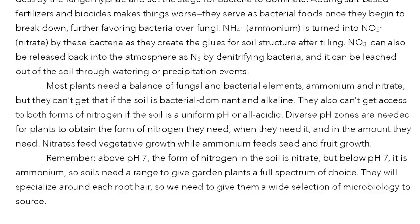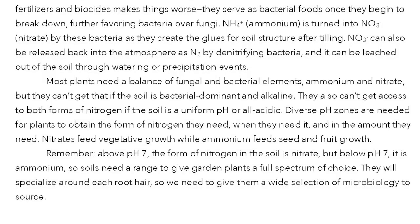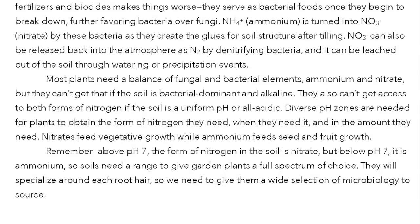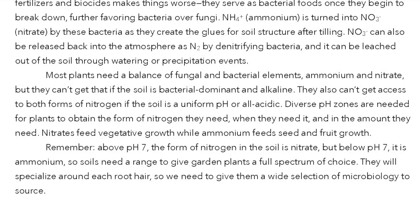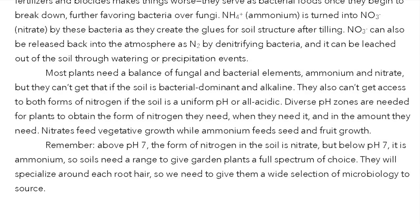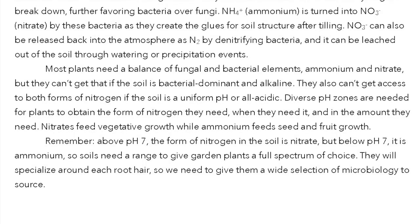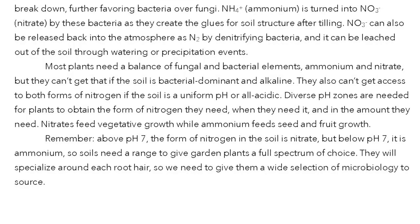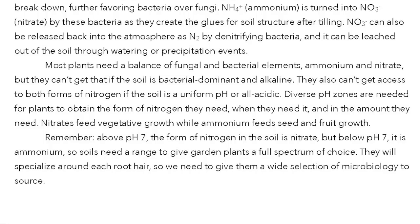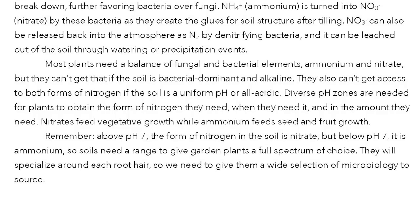Plants also can't get access to both forms of nitrogen if the soil is a uniform pH or all acidic. Diverse pH zones are needed for plants to obtain the form of nitrogen they need, when they need it, and in the amount they need. Nitrates feed vegetative growth, while ammonium feeds seed and fruit growth. Remember: above pH 7, the form of nitrogen in the soil is nitrate; below pH 7, it is ammonium. So soils need a range to give garden plants a full spectrum of choice — they will specialize around each root hair, so we need to give them a wide selection of microbiology to source.